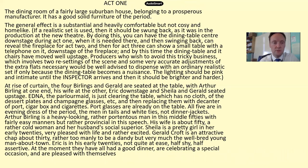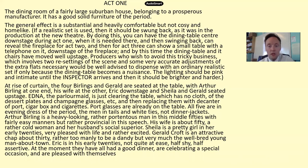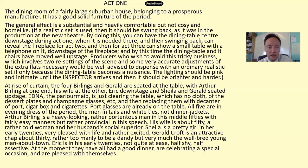The stage directions themselves: Act One — the dining room of a fairly large suburban house belonging to a prosperous manufacturer. It has good solid furniture of the period. The general effect is substantial and heavily comfortable but not cozy and home-like. Priestley provides detailed instructions to directors about staging — the dining table centred downstage during Act One, swung back to reveal the fireplace for Act Two, and a small table with a telephone downstage of the fireplace for Act Three.